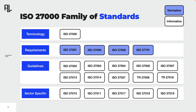There are four categories of standards within this family: standards describing overview and terminology, standards specifying requirements, standards describing general guidelines, and standards describing sector-specific guidelines.